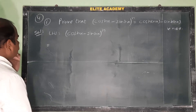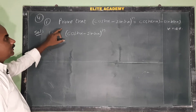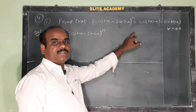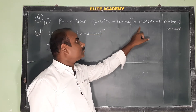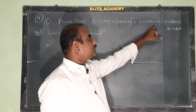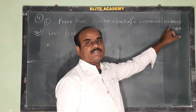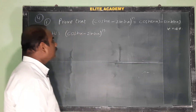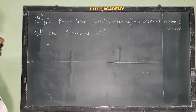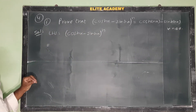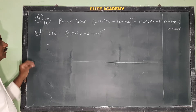Fourth question: prove that (cosh x - sinh x)^n is equal to cosh(nx) minus sinh(nx) for all n belonging to R. We need to prove LHS equals RHS.